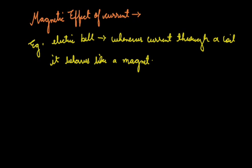Now we will discuss some dangers of electricity. If current passes through the heart, it causes heart muscles to contract and death can occur. All electrical appliances in wet places are very dangerous, and we should not touch electric switches or electrical contacts when we are wet. At wet places, appliances should be handled very carefully.